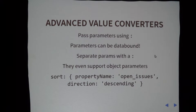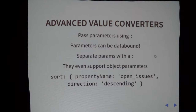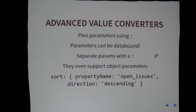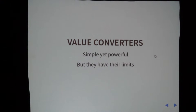Think about if you have a list of stuff and you want to sort it before putting it into an ordered list, or a select dropdown you're binding and want a list of names sorted before display. You can pass that in and say 'sort by this property name, descending'. You can start to see how these simple concepts can start to provide really powerful functionality. Value converters are simple but powerful, but they do have their limits.